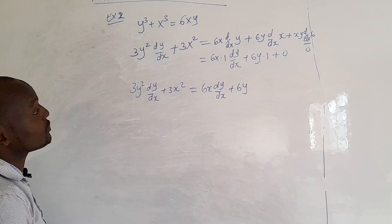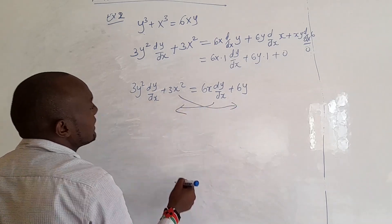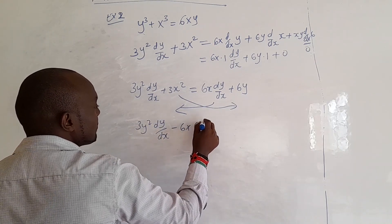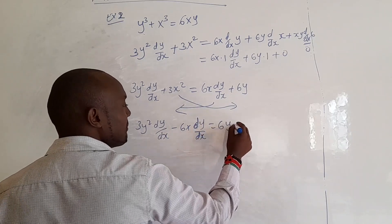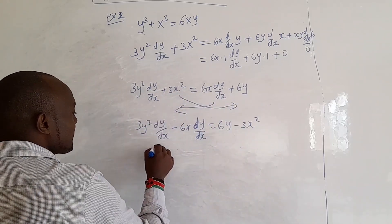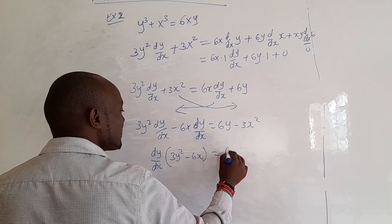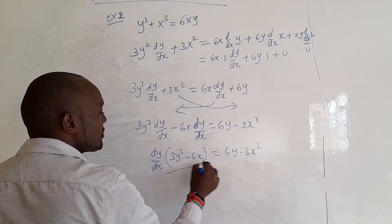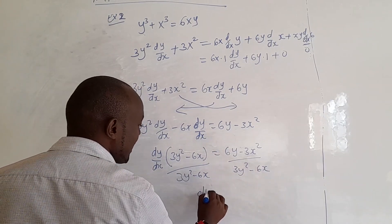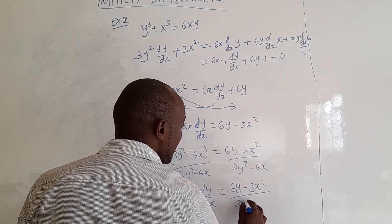Remember we want to solve for dy/dx, so we must make it the subject. Bring the 6x dy/dx to the left and the 3x squared to the right: 3y squared dy/dx minus 6x dy/dx equals 6y minus 3x squared. Factor out dy/dx on the left: dy/dx times (3y squared minus 6x) equals 6y minus 3x squared. Divide both sides: dy/dx equals (6y minus 3x squared) over (3y squared minus 6x).